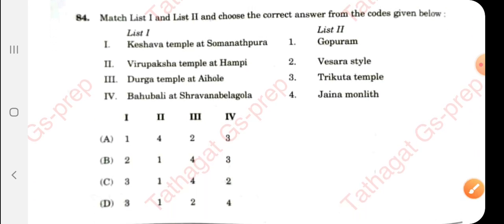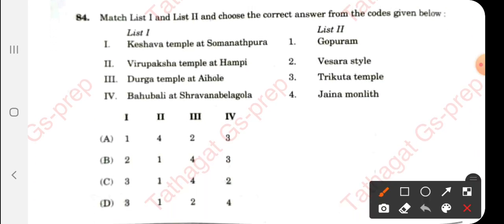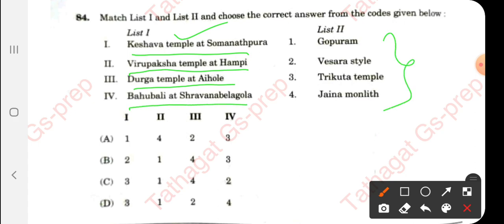Question 84: They have given List 1 and List 2. List 1 includes Keshava Temple at Somnathpura, Virupaksha Temple at Hampi, Durga Temple at Aihole, and Bahubali at Shravanabelagola with their matching features. The right answer is option D. Cross-verify as needed.